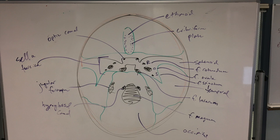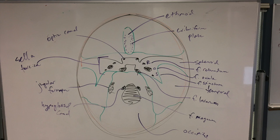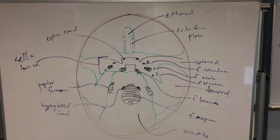It kind of stretches up on the lateral side — temporal. And then back here, this big bone that occupies the bottom half of the skull is the occipital bone. So those are our major bones. Now let's talk about the different holes that we have in the skull.